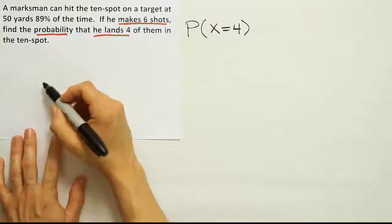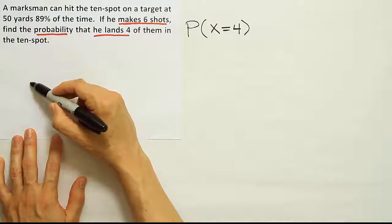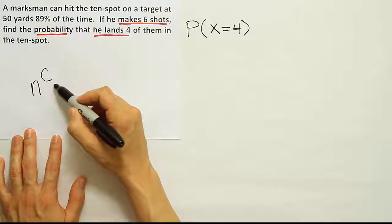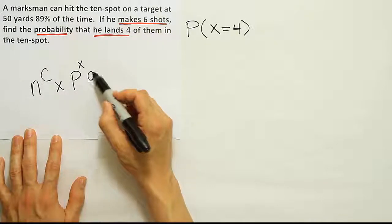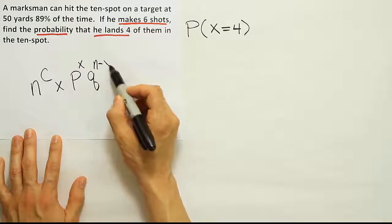Now, again, just to recap, the formula for binomial probability is N C X, right? And then we're going to have the probability of success to the X power, probability of failure to the N minus X power, right?